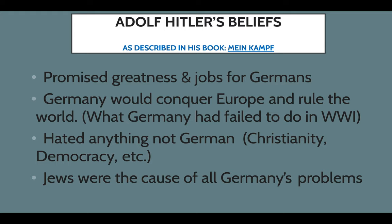Myth number one: Germany didn't know what he would do — they were blind to it. That is a myth because he wrote a book called Mein Kampf, which translated from German means 'my story' or 'my struggle.' In this book, he wrote all about his plans to conquer the world, to get rid of a whole race, religion, and culture, and how he was going to do that. It wasn't secret — he told everyone about it. He wrote in detail about his plans. So Germany saying they didn't know is simply wrong.